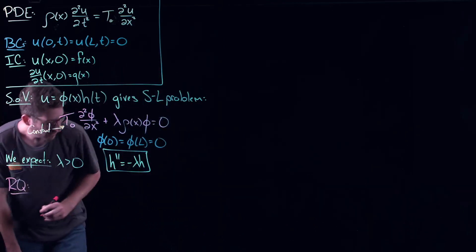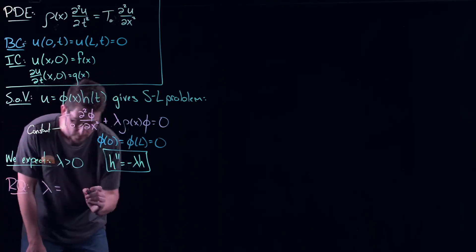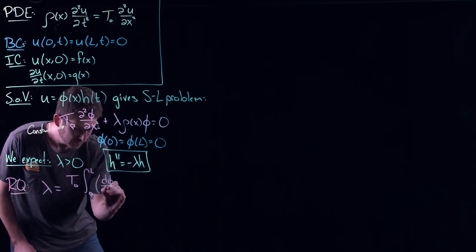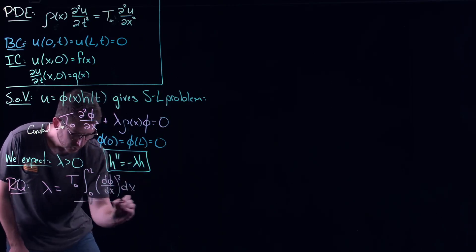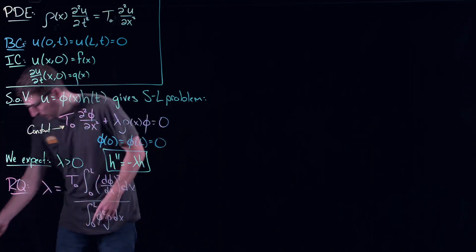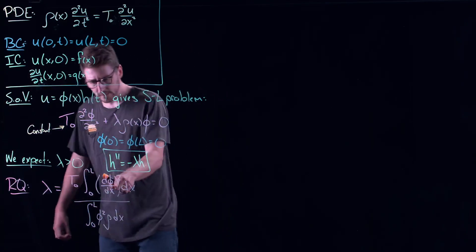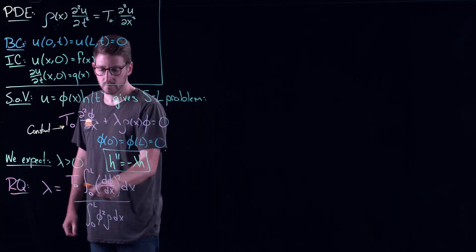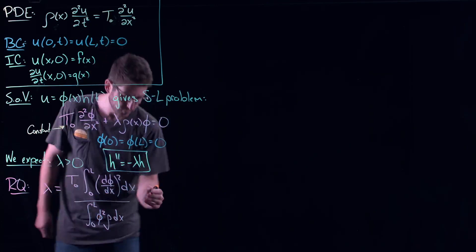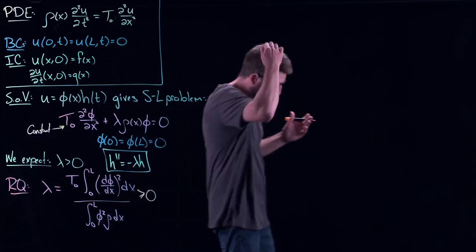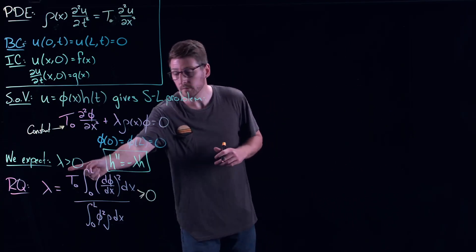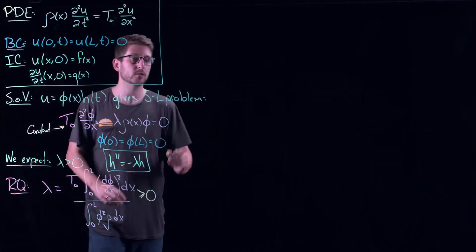Let's use the Rayleigh quotient to show this. The Rayleigh quotient tells us that λ equals T₀ times the integral from 0 to L of (dφ/dx)² dx, divided by the integral from 0 to L of φ² ρ dx. Now: (dφ/dx)² is non-negative, T₀ must be non-negative to be physical, ρ must be positive, and φ² is non-negative — so the whole expression is non-negative. At least we know eigenvalues are non-negative; there are no negative eigenvalues.